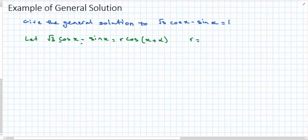Remembering that r squared is a squared plus b squared, and tan alpha is b over a.